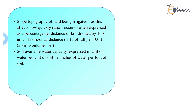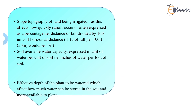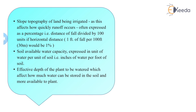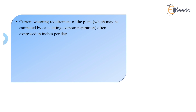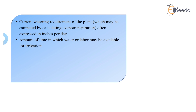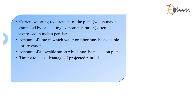Then soil available water capacity and the effective depth of the plant to be watered, which affects how much water can be stored in the soil and made available to the plant. Then the current watering requirement of the plant is determined by calculating the evapotranspiration. Then the amount of time in which water or water level may be available for irrigation, and the amount of allowable stress which may be placed on the plant.